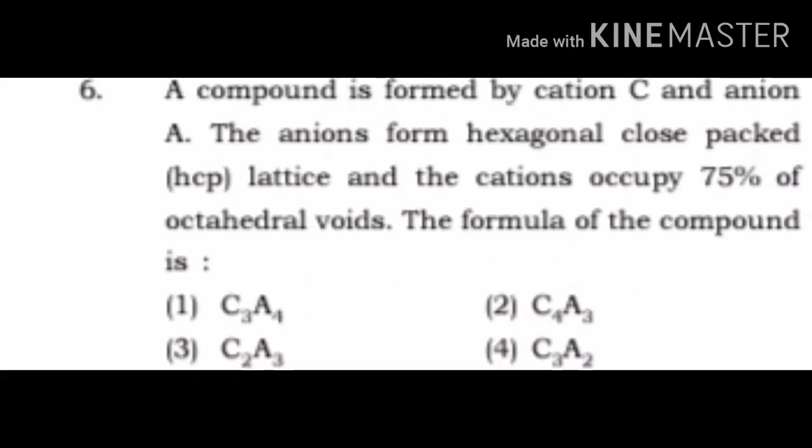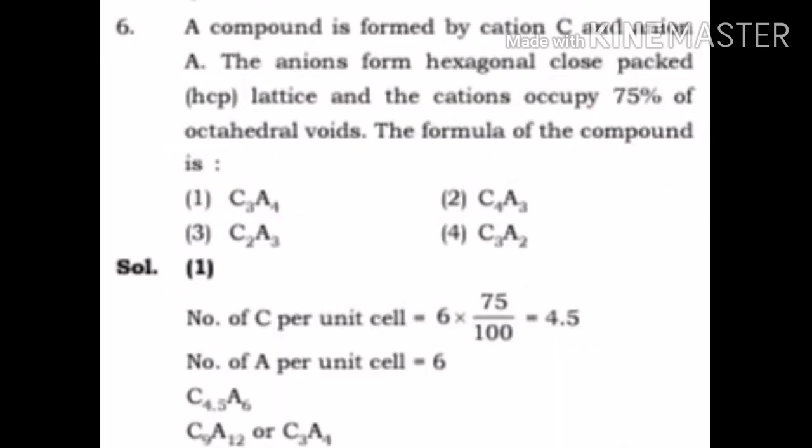Sixth question: a compound is formed by cation C and anion A. The anion forms hexagonal close packed HCP lattice and the cation occupies 75% of octahedral voids. The formula of compound is: 1) C3A4, 2) C4A3, 3) C2A3, 4) C3A2.